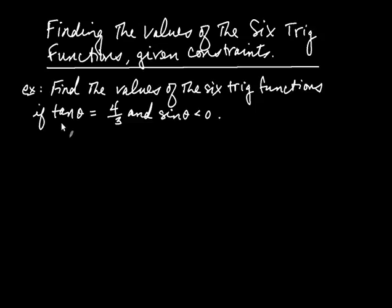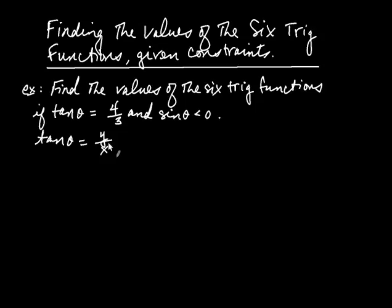Tangent by definition is always y divided by x. You have to be really careful here because you don't want to draw the conclusion that y has to be four and x has to be three. That's not necessarily true. Y divided by x has to be four over three at the end of the day, but that doesn't imply y has to be four and x has to be three.